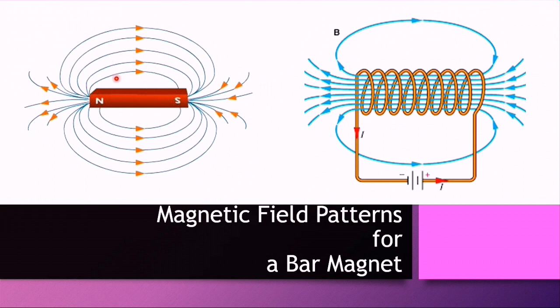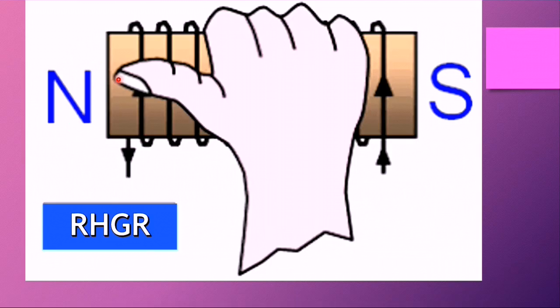Now we use right hand grip rule to find out the direction of the magnetic lines of flux of a solenoid. Right hand grip rule states that curl the fingers of the right hand in the direction of the current, and your thumb now points out in the direction of the lines of flux inside the coil, towards the end of the solenoid that behaves like the north pole of the bar magnet.